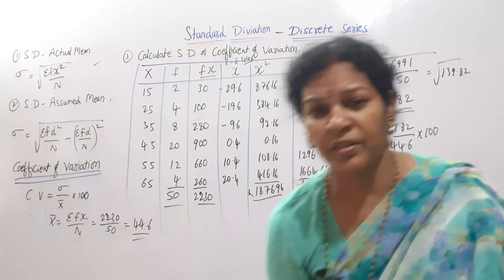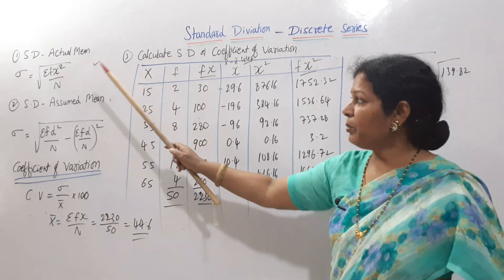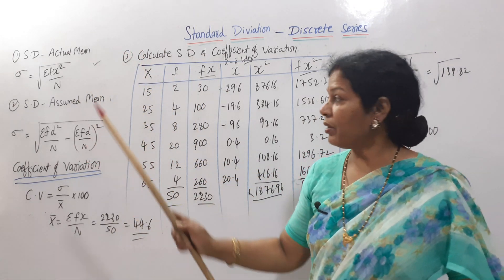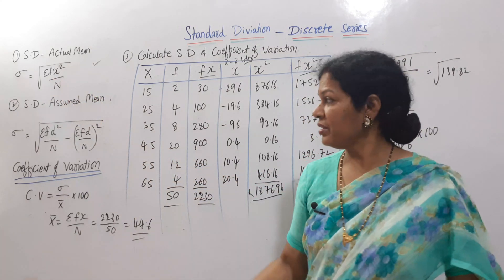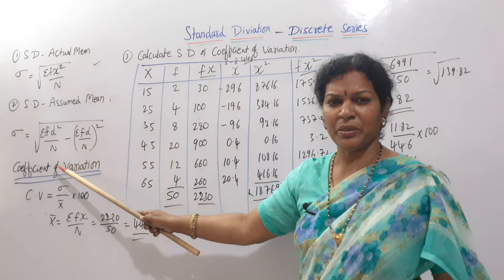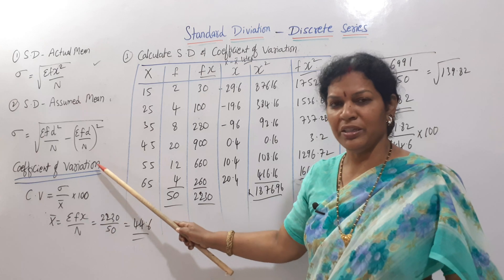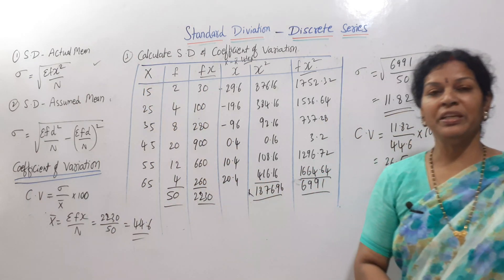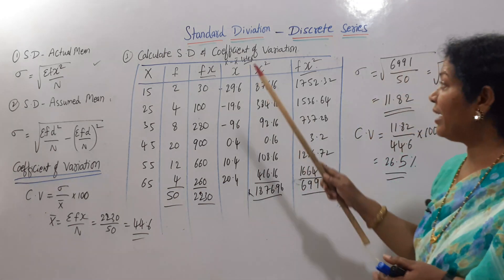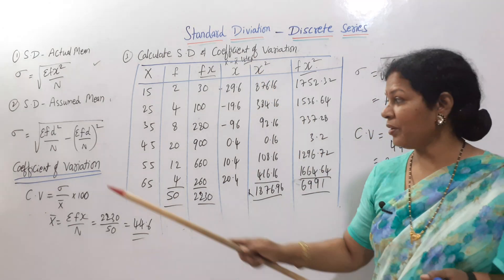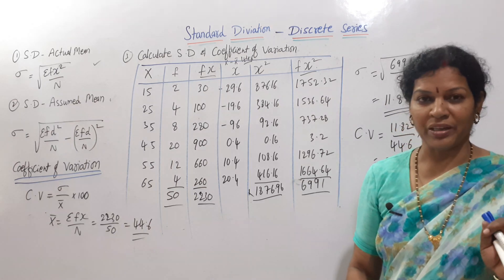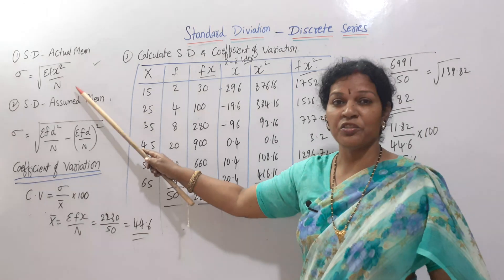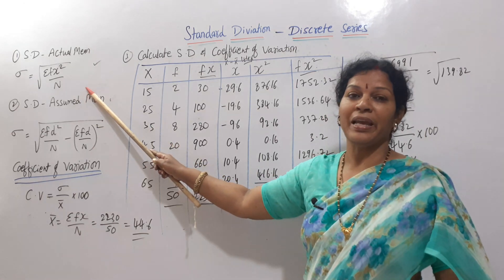Let me explain it once again clearly. The formula: for individual series it was square root of sigma x-square by n; for discrete series it becomes square root of sigma f·x-square by n. For assumed mean, it's square root of sigma f·d-square by n minus (sigma f·d by n) squared. When coefficient of variation is required, use the actual mean method so you get x-bar and rho together.